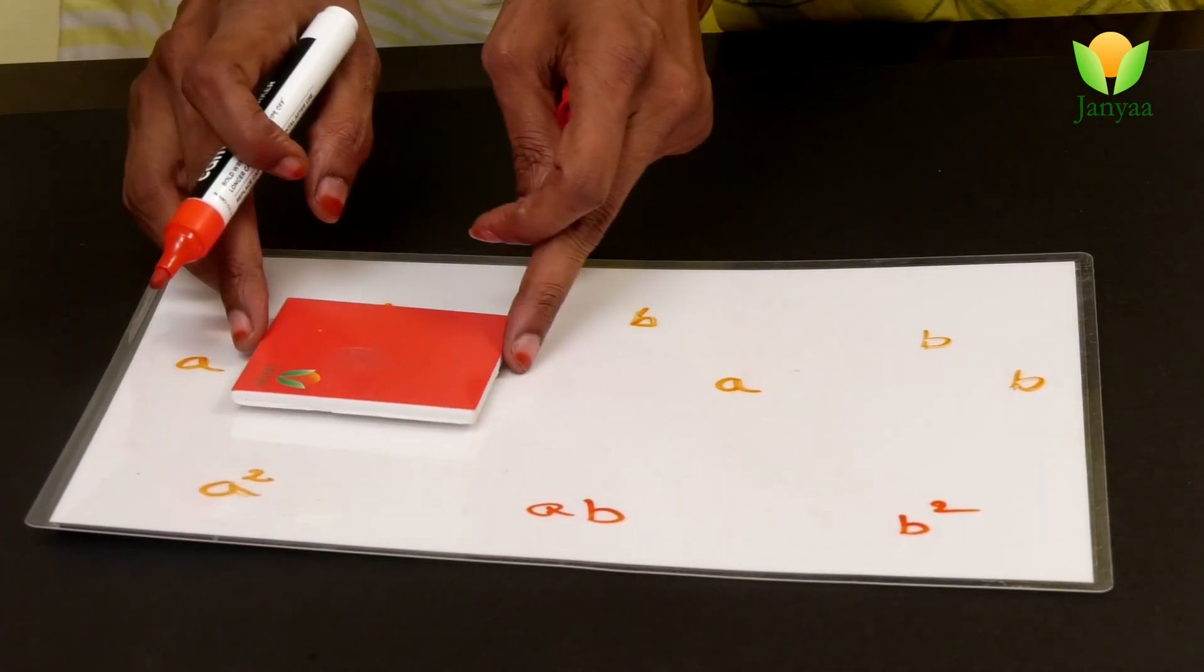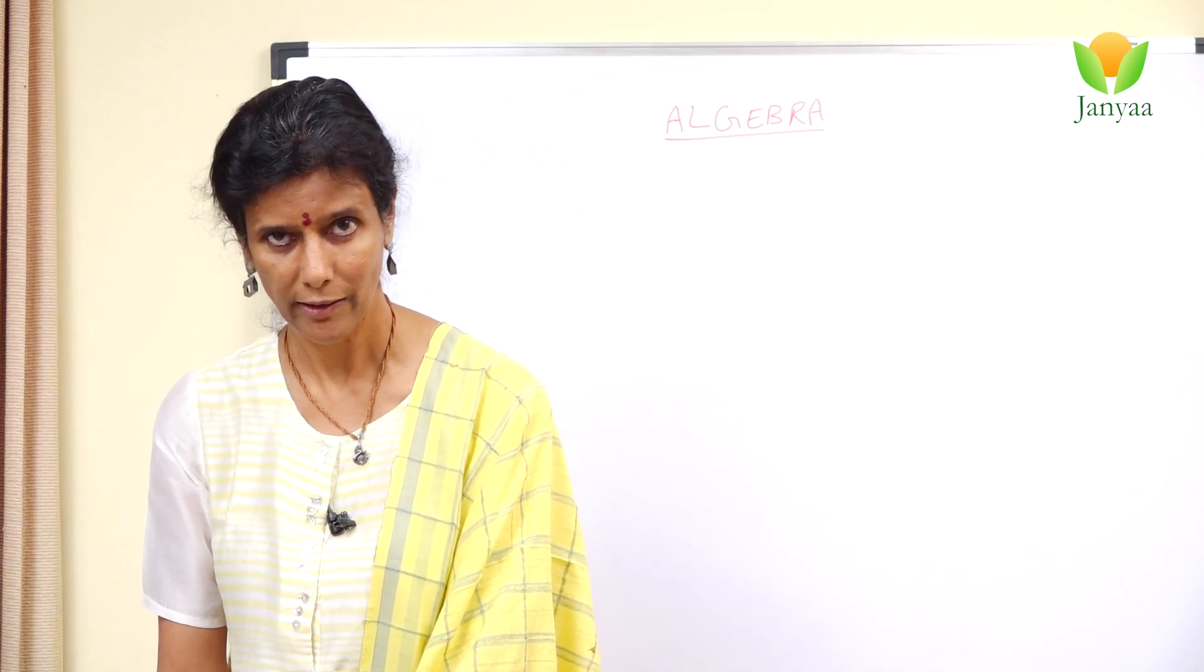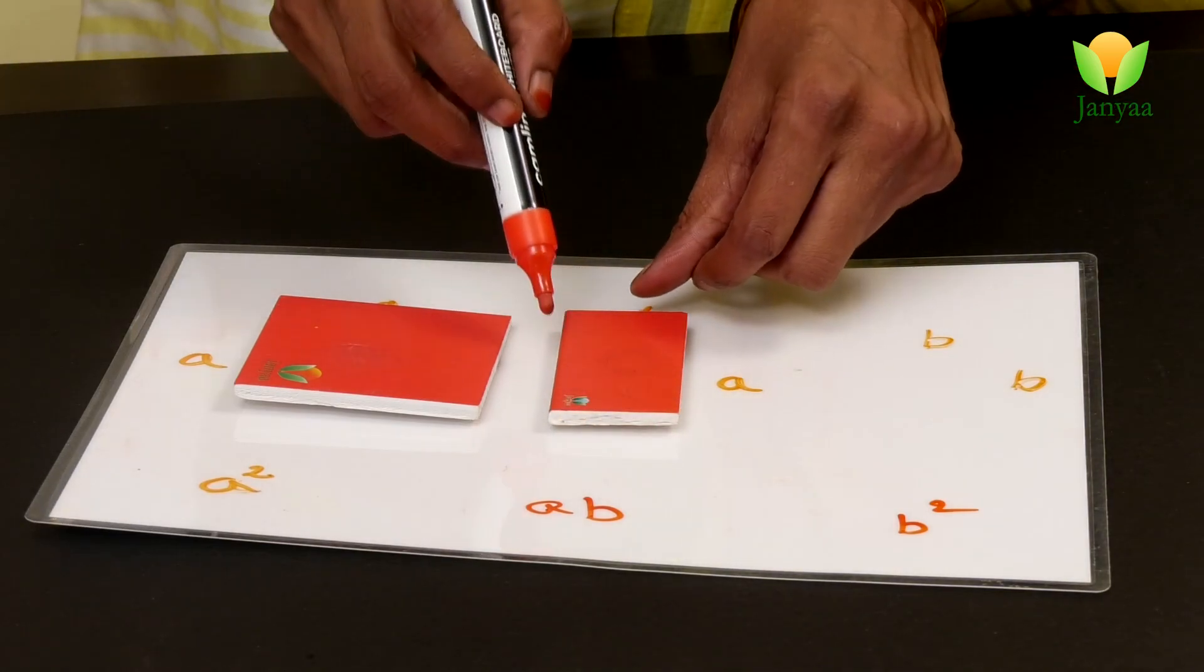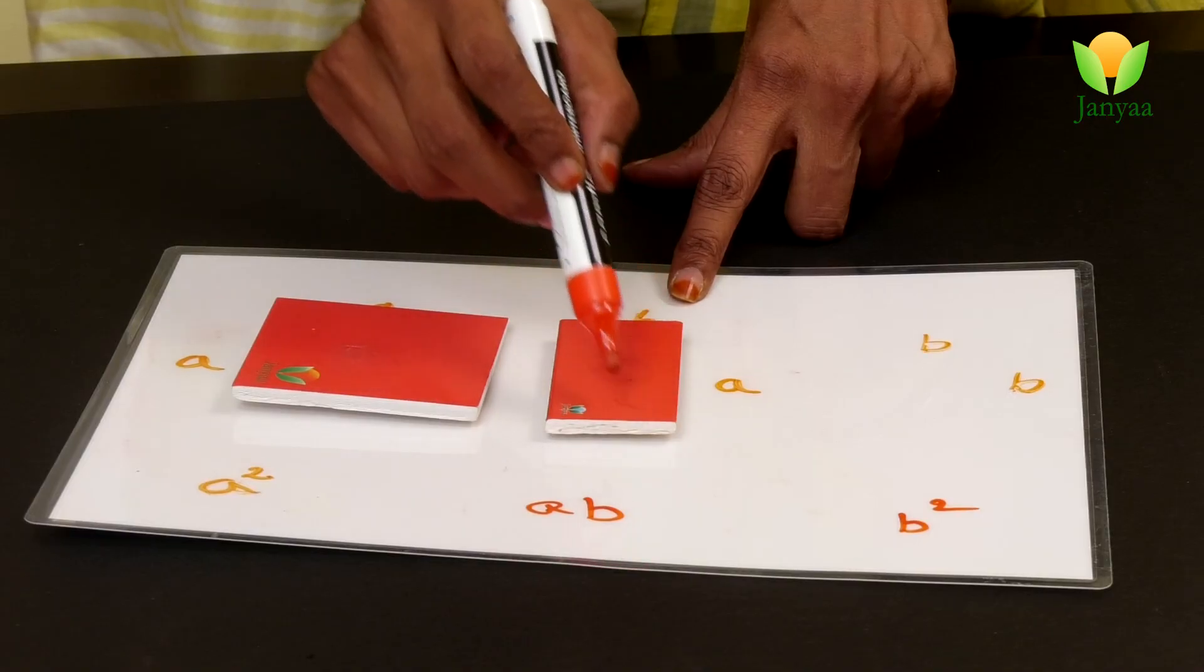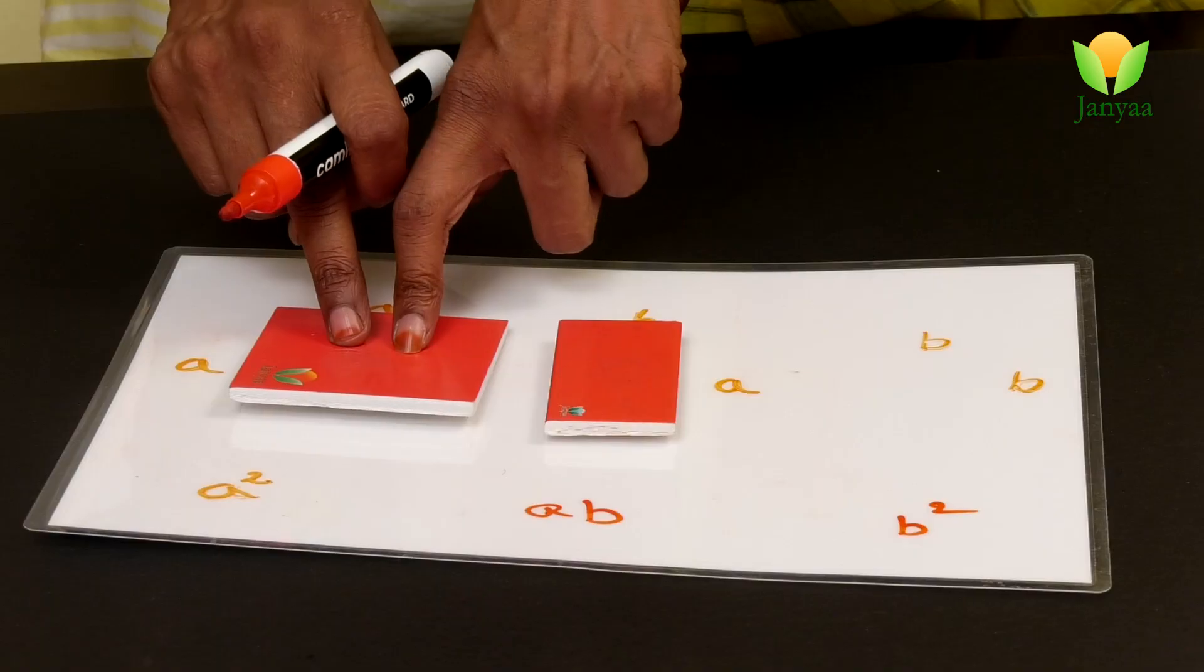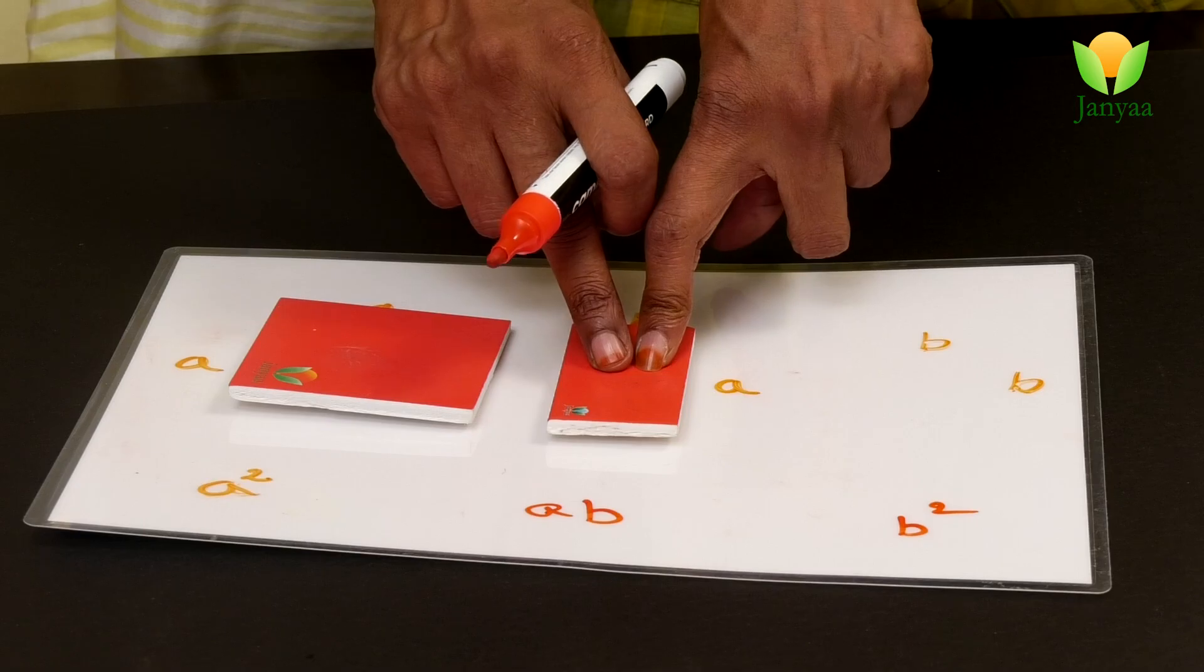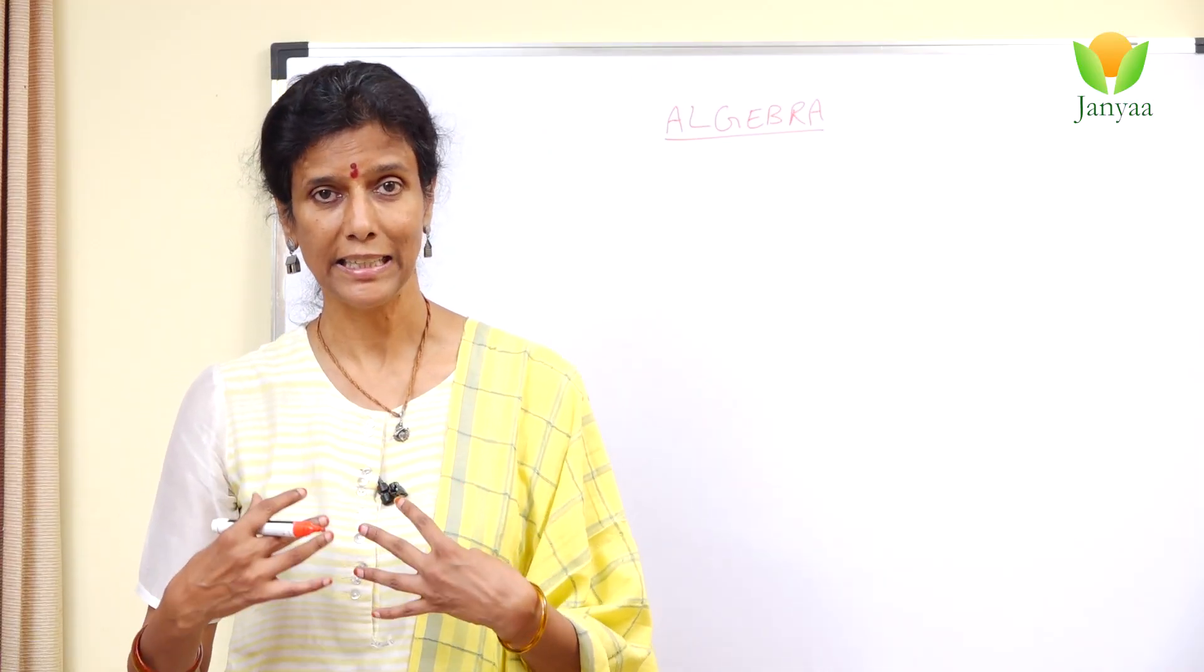Now let's bring this one back here. We know this is a. Let's call this b. So now area of a rectangle, a into b, ab. So which means we can use this tile as x square or a square. We can use this tile as x or ab, depending on what type of equations we are dealing with.